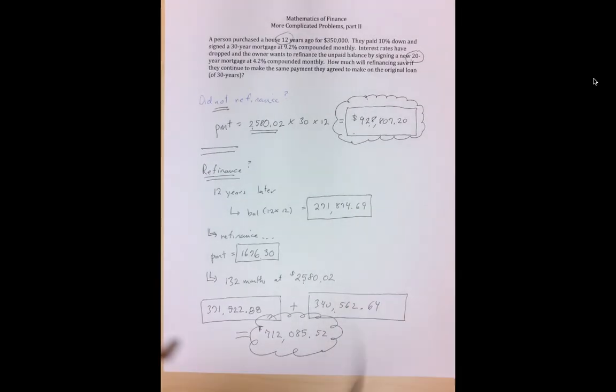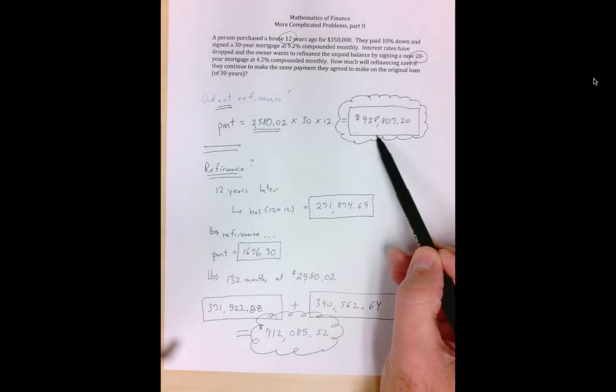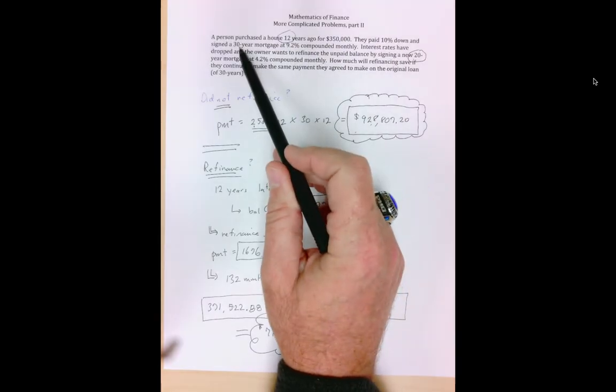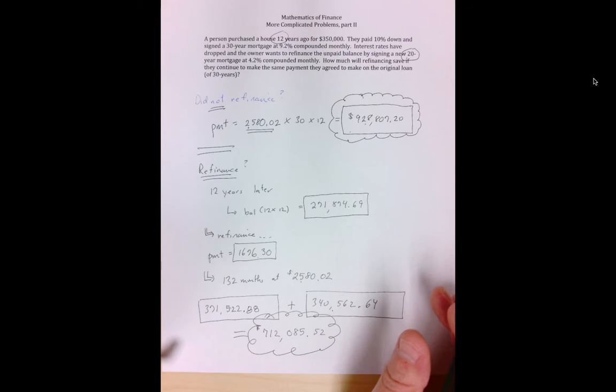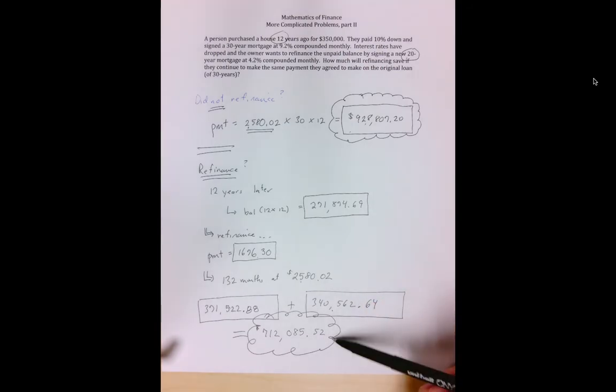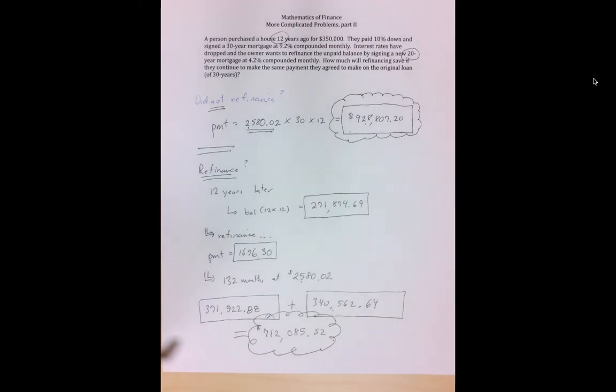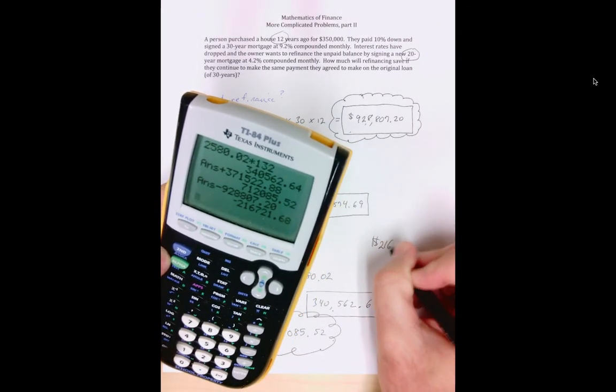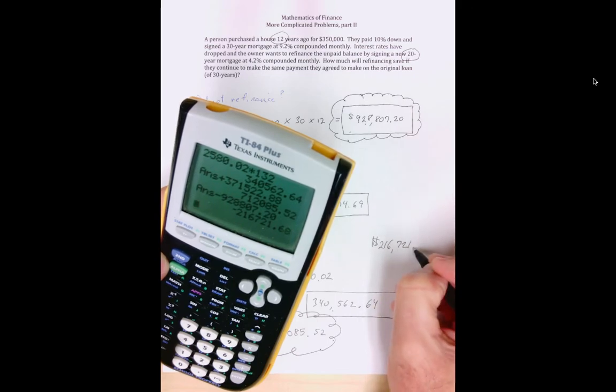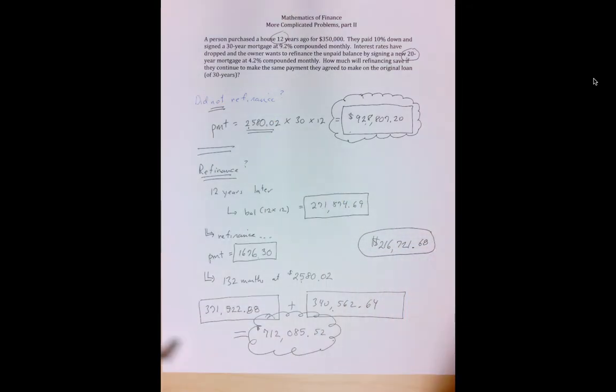Clearly, if you take the difference, you're going to see how much you would have saved. So instead of paying the bank $928,807.20 that you would have paid if you did not refinance and continued at 9.2 for the next 18 years, already paid 12, next 18, you would have paid a whopping $928,000, almost a million dollars on a $315,000 home. That's crazy. In this situation, you would have paid $712,000, so if my arithmetic is correct, I get $216,721.68. There's a lot going on here, so let's make sure that we...